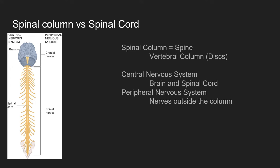Here we have an example of the spinal column versus the spinal cord. The spinal column is the actual spine — these are vertebral discs, the column, the bony structures that encapsulate the spinal cord. The spinal cord is the bundle of nerves that exits the cranial vault, creating the spinal cord. Anything that exists outside of the spinal column is going to be peripheral nerves.